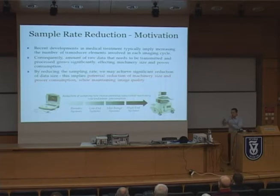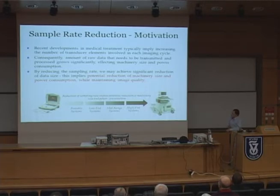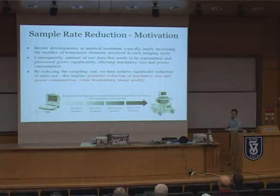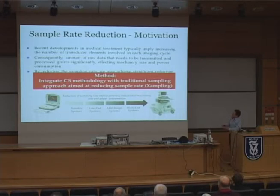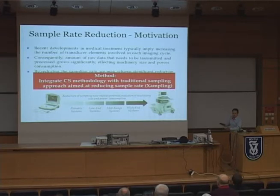The goal is to do this as close as possible to the front end of the system by reducing the sample rate of the analog signal. The key to significant reduction in sample rate lies beyond classic sampling theory, in the ideas discussed here today. The method is to integrate compressed sensing methodology with the traditional sampling approach to reduce the sampling rate — this is the framework we call xampling, which we will continue discussing later on.